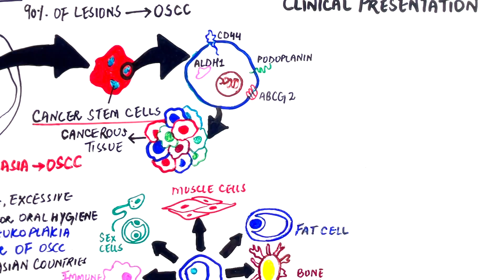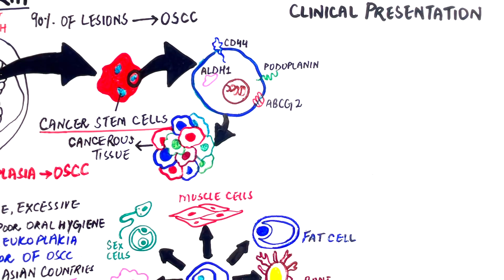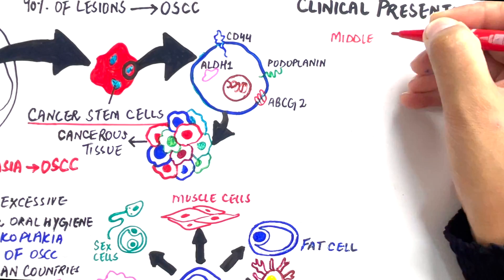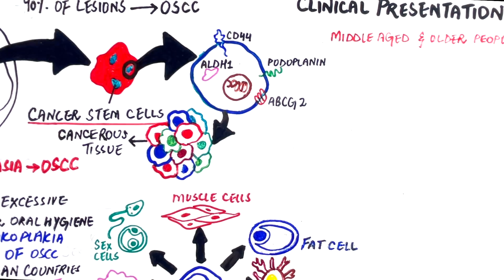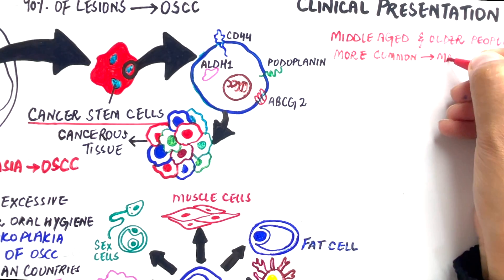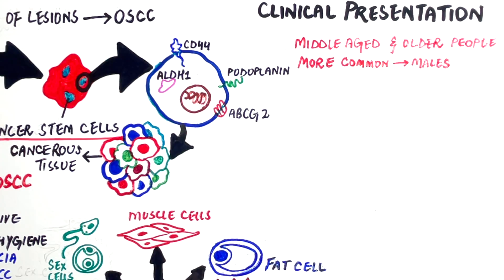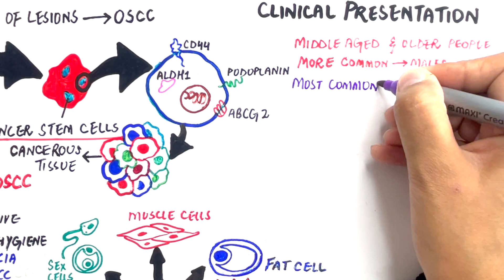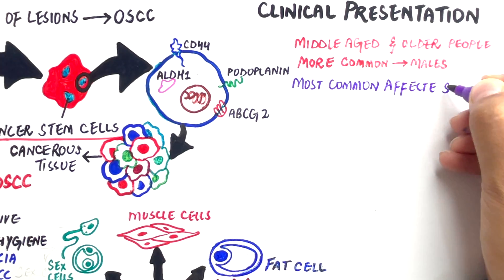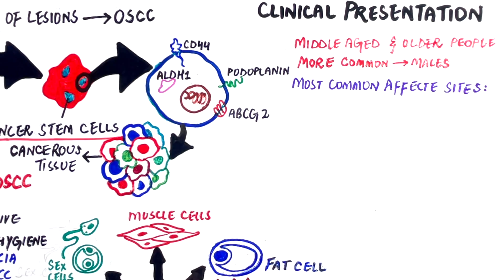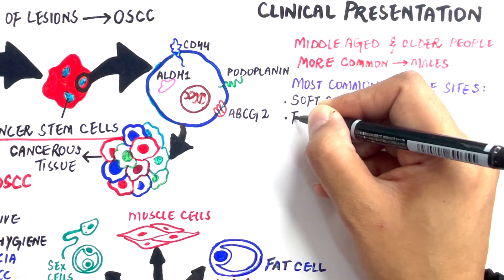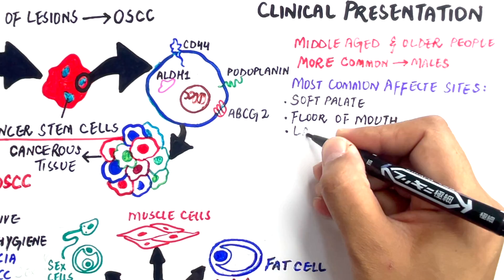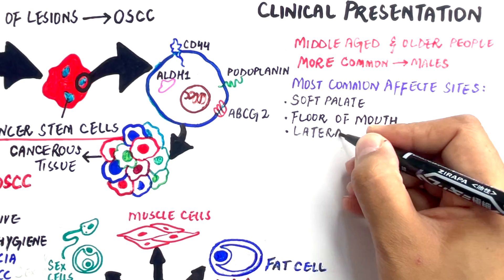Clinically, erythroplachia predominantly affects middle-aged and older individuals and is more commonly seen in males. It manifests as red, well-demarcated velvety patches, with the most common occurrence on the soft palate, mouth floor, lateral part of the tongue and retromolar pad region.